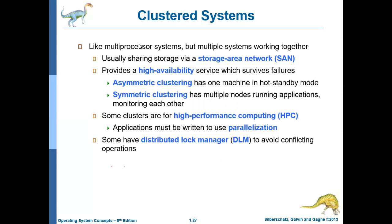Symmetric clustering performs much better than asymmetric clustering because it effectively utilizes resources. Clustered systems are used primarily to achieve high performance computing — to increase computational power. Applications running in the clustered system should be able to achieve parallelization; that is, they should be able to distribute the task among multiple nodes, otherwise the nodes will be underutilized. In some cases, nodes in a cluster may share common memory; if one node is using the memory, the other nodes should not be able to access it — the memory should be locked. This is achieved using a concept called distributed lock manager.